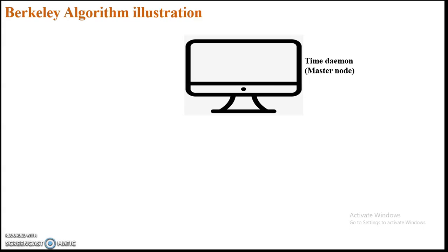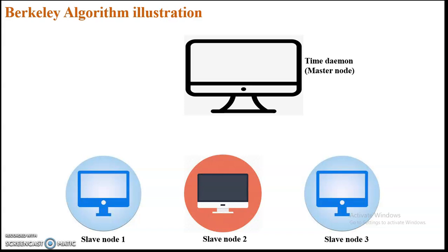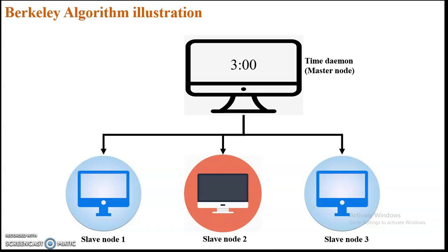In this example there is one master node, also called the time daemon, and there are slave nodes. So we have one master node and multiple slave nodes connected in a network. This time daemon has its clock set to 3:00. Slave node 1 has 3:10 in its clock, slave node 2 has 3:20, and slave node 3 has 2:50.